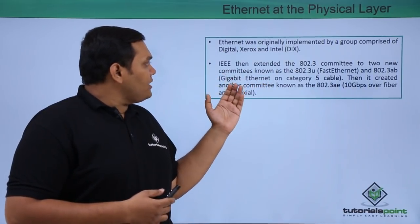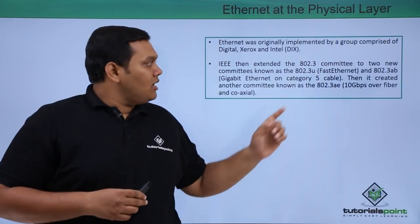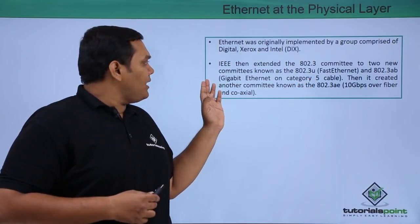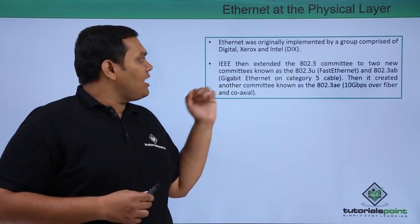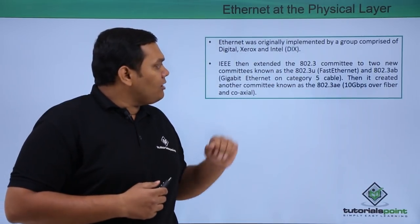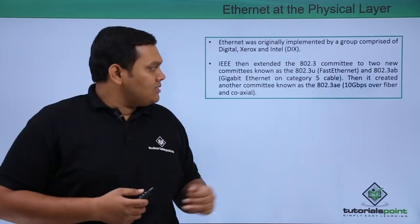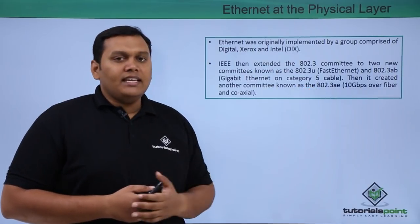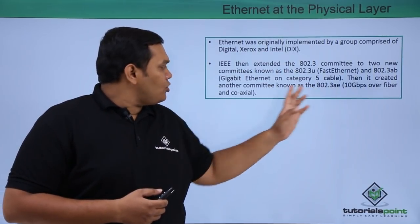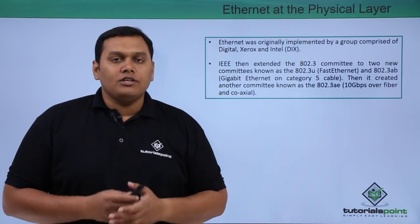The IEEE extended to two new committees: 802.3u, which is Fast Ethernet, and 802.3ab, which is Gigabit Ethernet on a Category 5 cable. It also created 802.3ae, which is 10 Gbps Ethernet over fiber and coaxial cables.